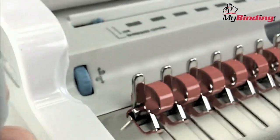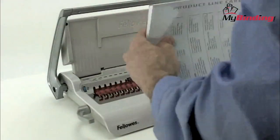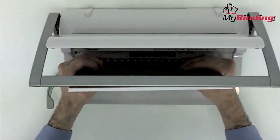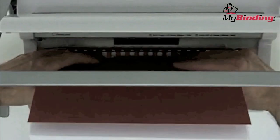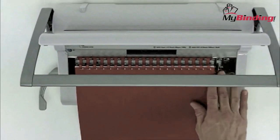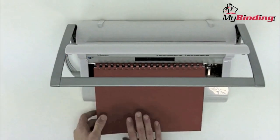You open the comb with the lever on the left-hand side of the machine. Simply pull down until it's open as far as you need. Thread your project over the teeth of the comb, pull it down, close the comb, and you're all set.